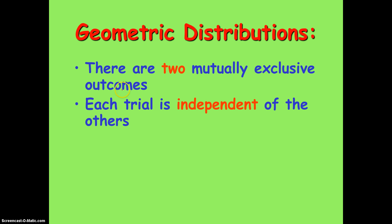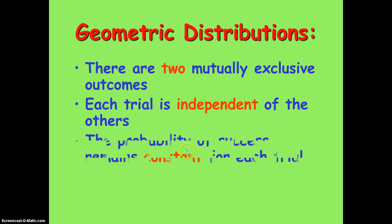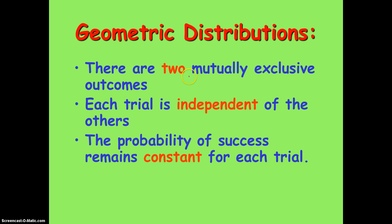There are some similarities with previous distributions we've discussed. There are two mutually exclusive outcomes, which means it's either a yes or a no, a positive or a negative, a success or a failure. There's no middle ground in the outcome. If one occurs, the other cannot.